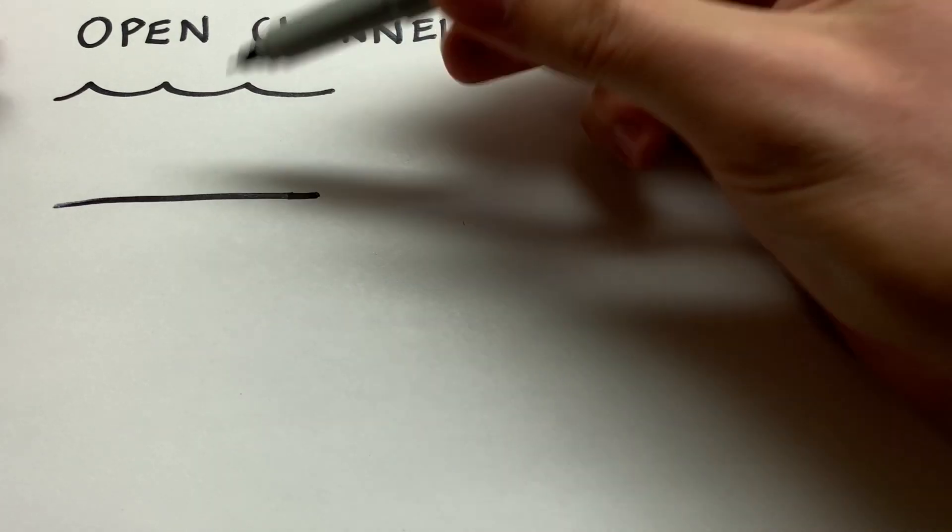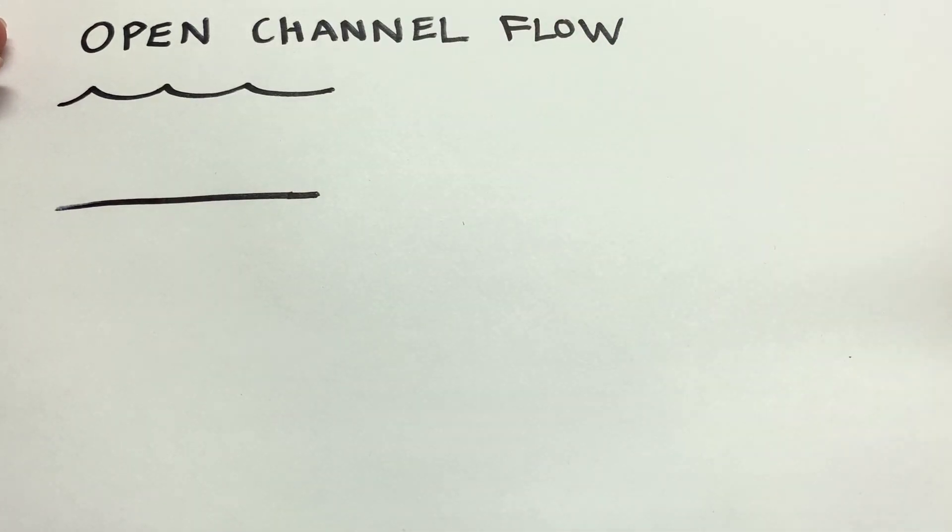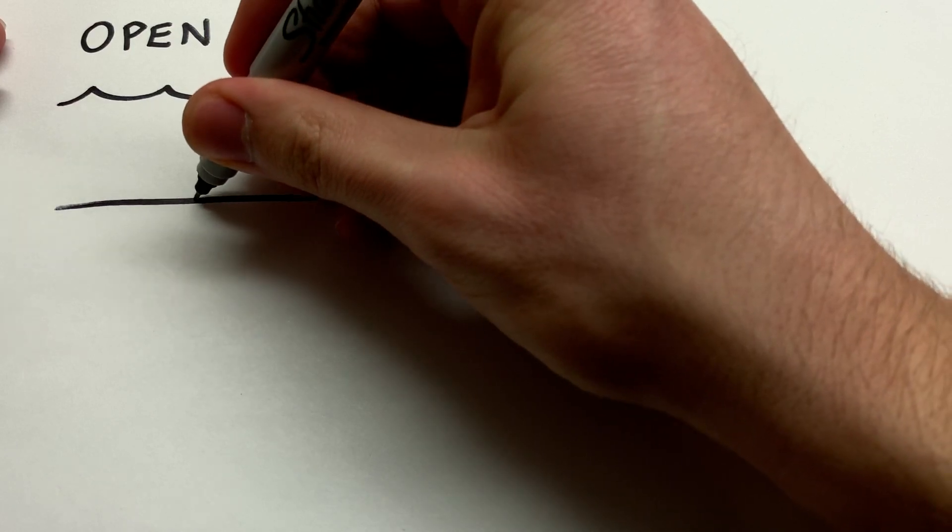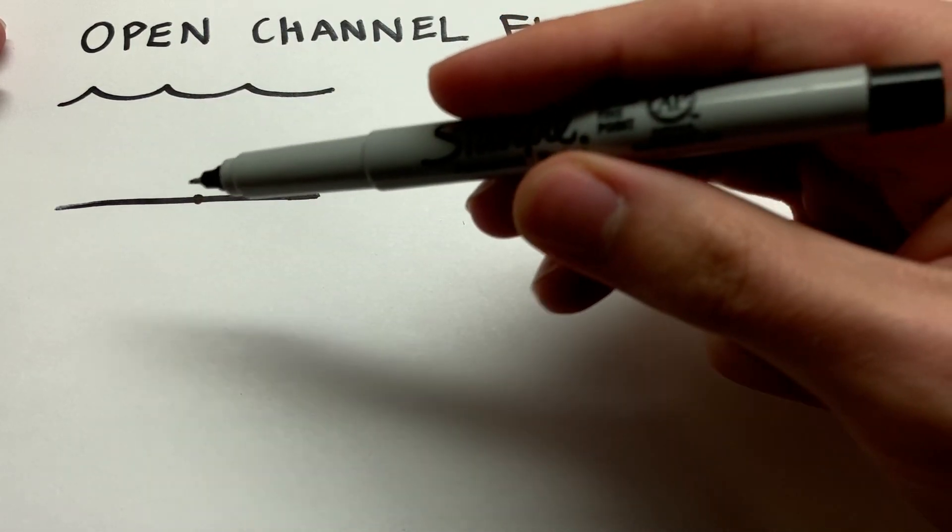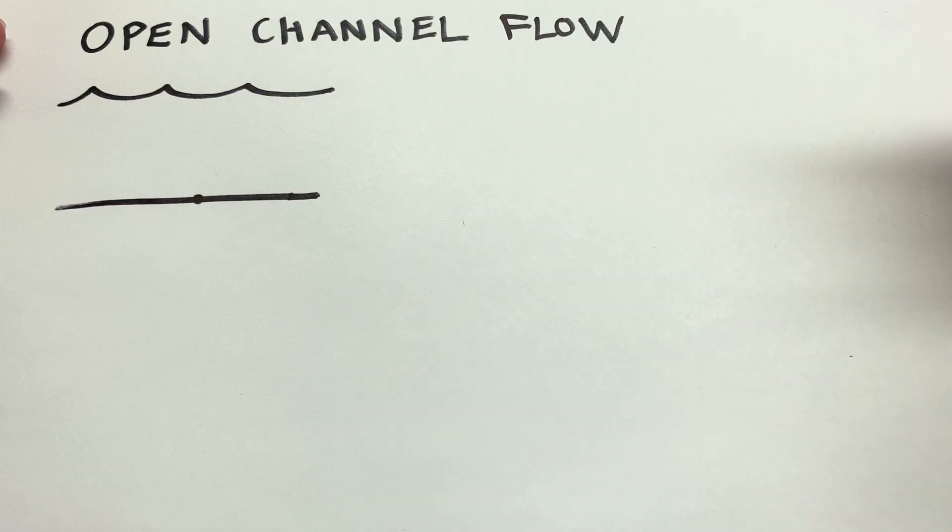So if you think of this as a longitudinal section of the river here, where the water's flowing from left to right, then you might be able to draw the flow profile on this thing. And the first thing to note is we usually define the bottom right here. And of course, I've drawn it as a straight line here, flat.